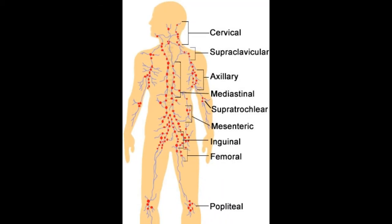Hello friends, hope you all are fine. Today I am going to discuss about lymph nodes, their locations and functions. Lymph nodes are the organs responsible for the functioning of the immune system. They are located in groups mostly in the neck, armpit, collarbone and groin. In this article, we will discuss the location and function of this immune system organ.